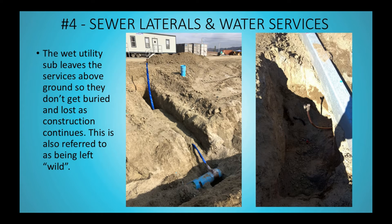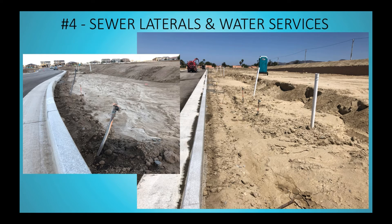Typically the wet utility sub will leave those services above ground so they don't get buried and lost as construction continues. This is also known as being left wild. In the picture on the left you can see the water main coming through, and the smaller pipe branching off is the water service — it goes under and then pops up above ground. After everything's backfilled and the streets are in, you can see these lines are the water services and the white pipes are for the sewer. Those services are left wild.